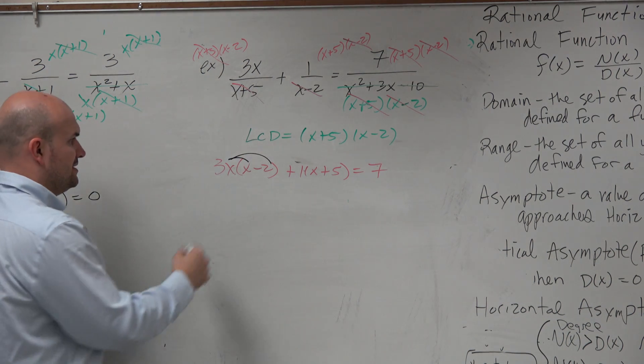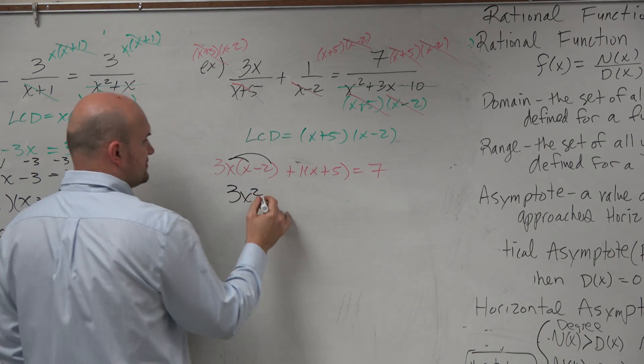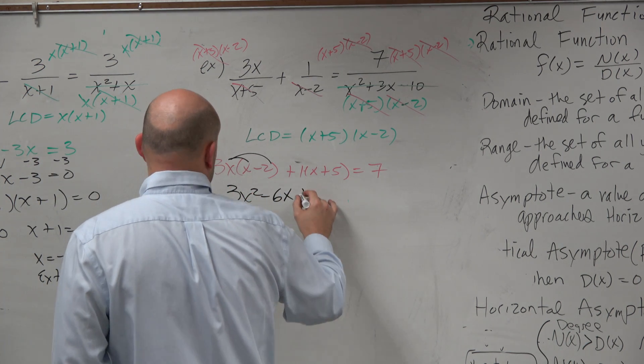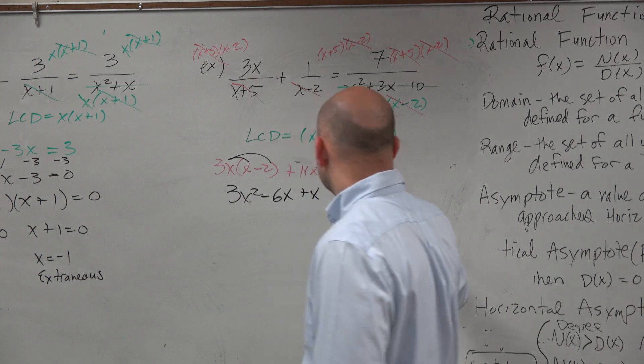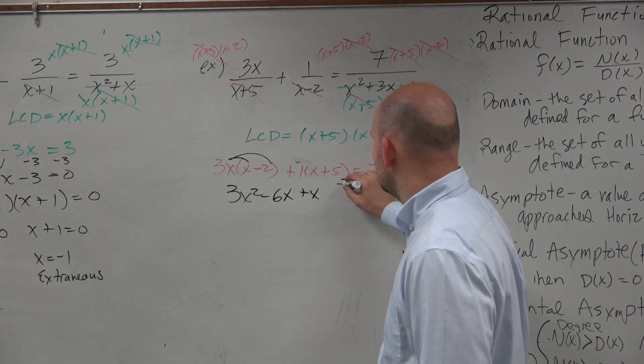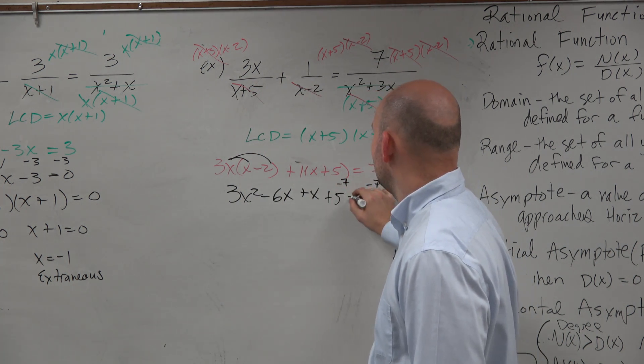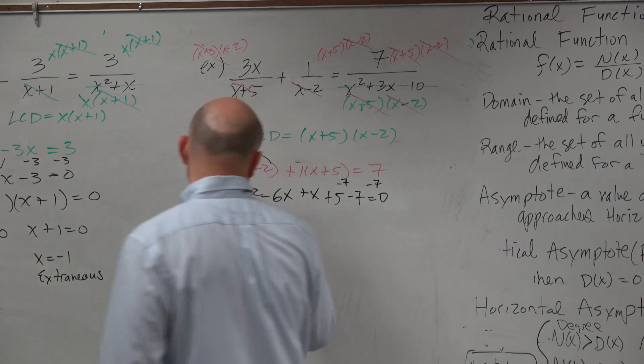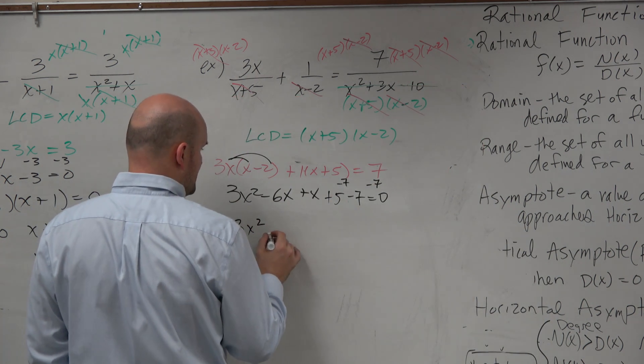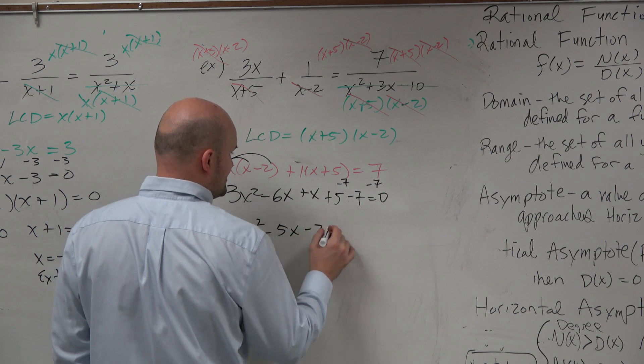So let's go and distribute. 3x squared minus 6x plus x. And then could I subtract 7 on both sides? So plus 5 minus 7 equals 0. Because again, I notice this is a quadratic. So 3x squared minus 5x minus 2 equals 0.